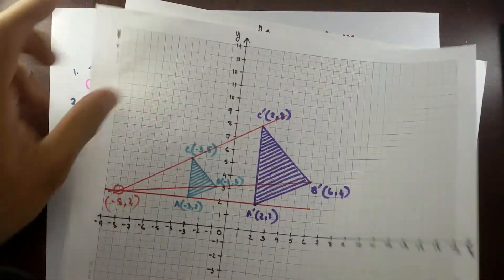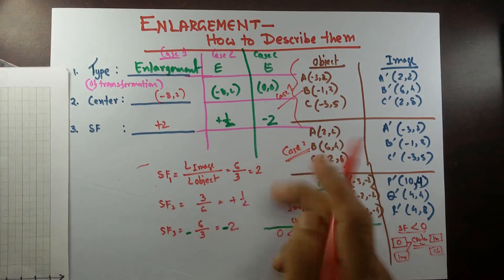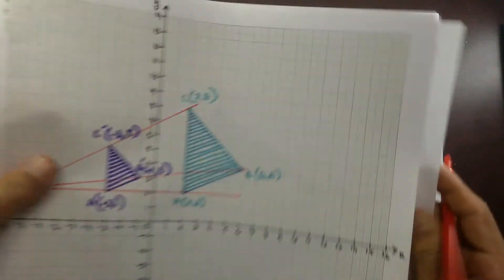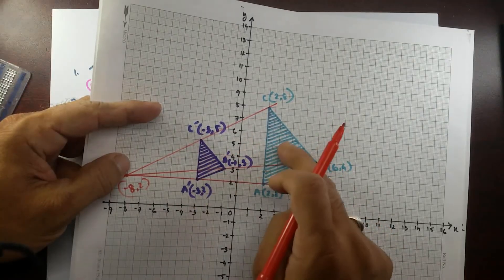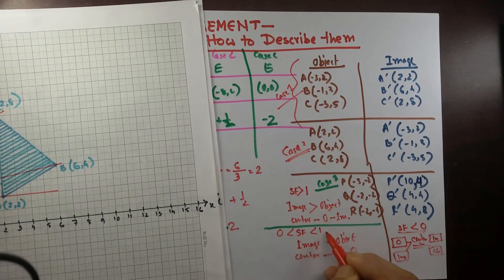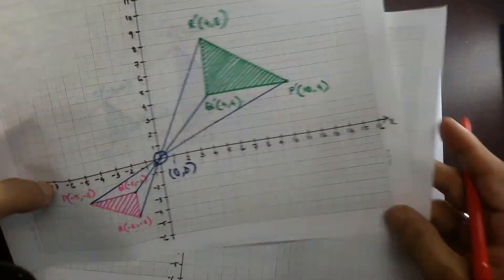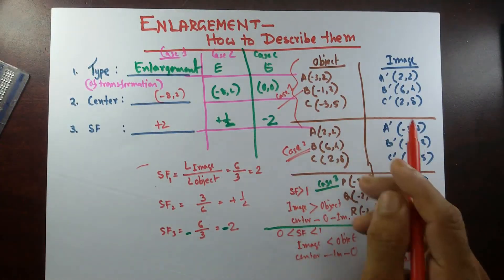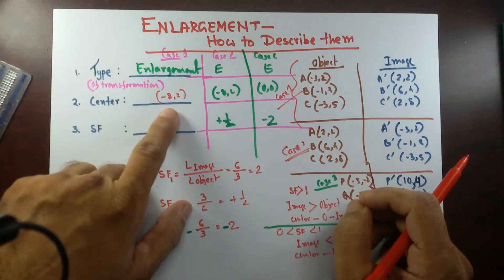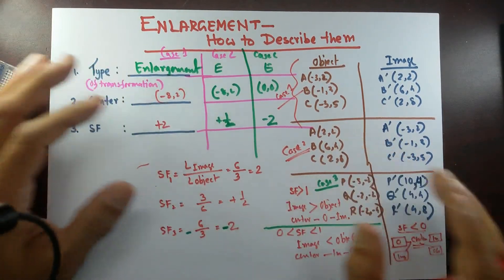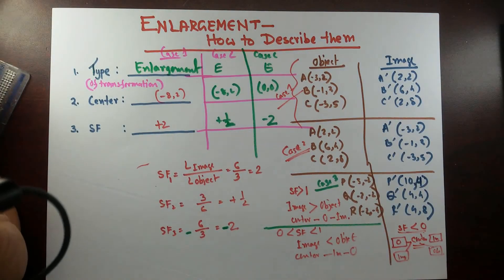To describe enlargement: center → object → image means image is bigger and scale factor is greater than 1. If image is smaller than the object, scale factor is between 0 and 1. If scale factor is negative, the center is between the object and image. That's how we describe enlargement — by stating the center and scale factor. This is the first video on enlargement. I hope you understand. See you in the next video. Thank you, have a good day.